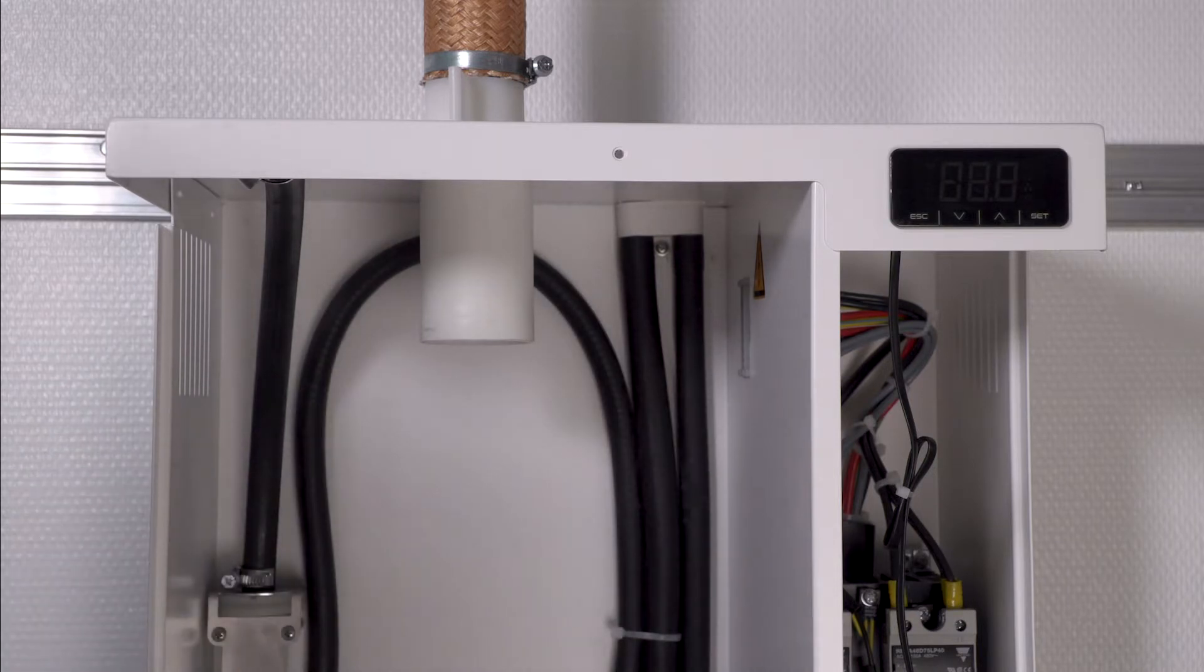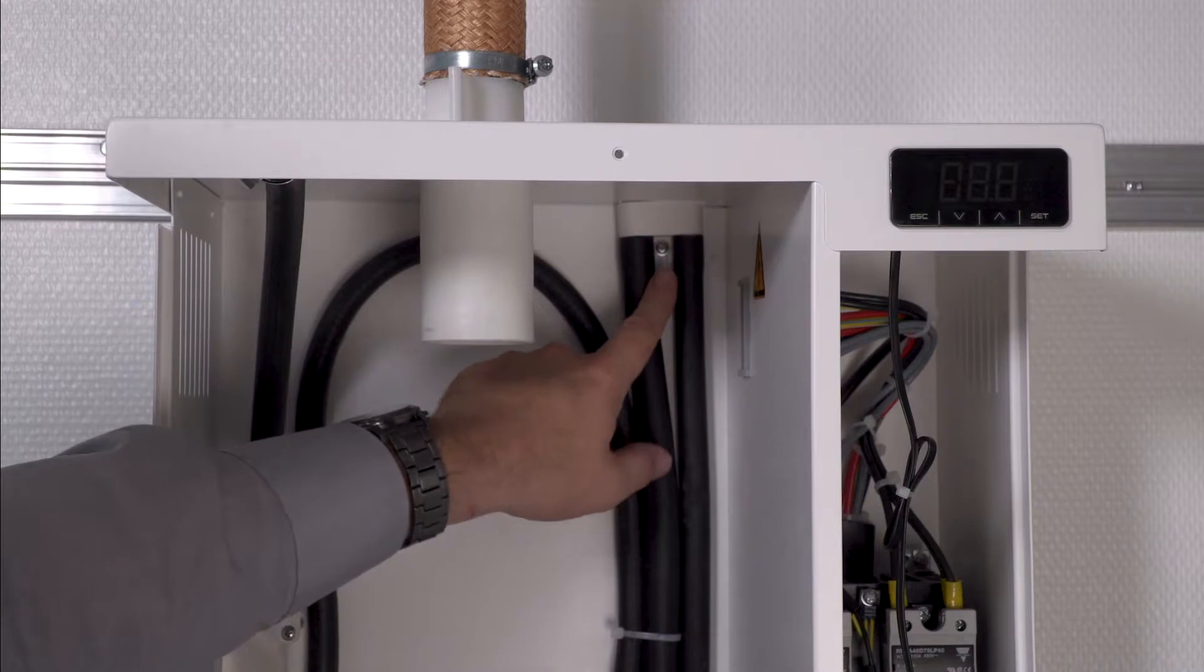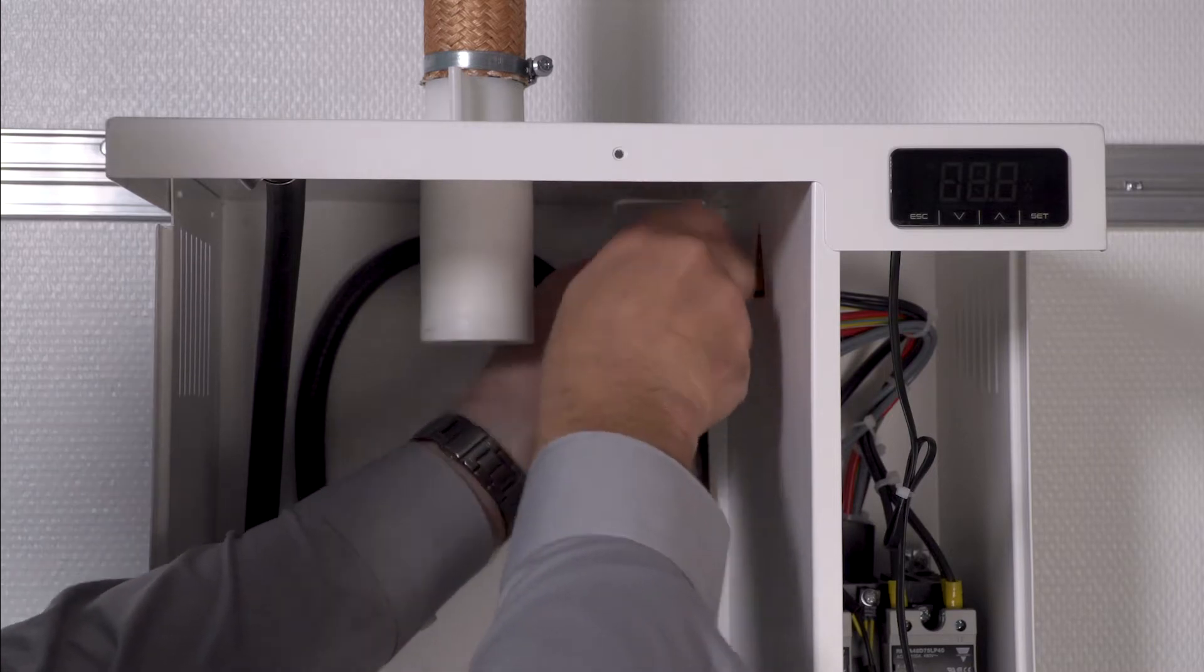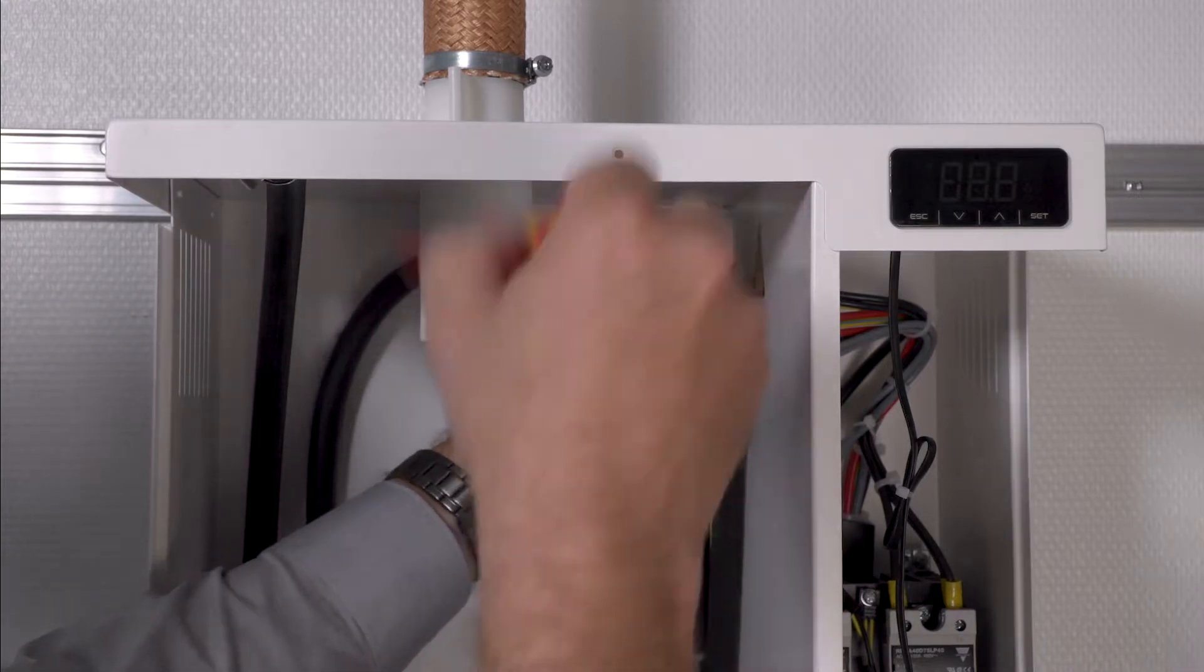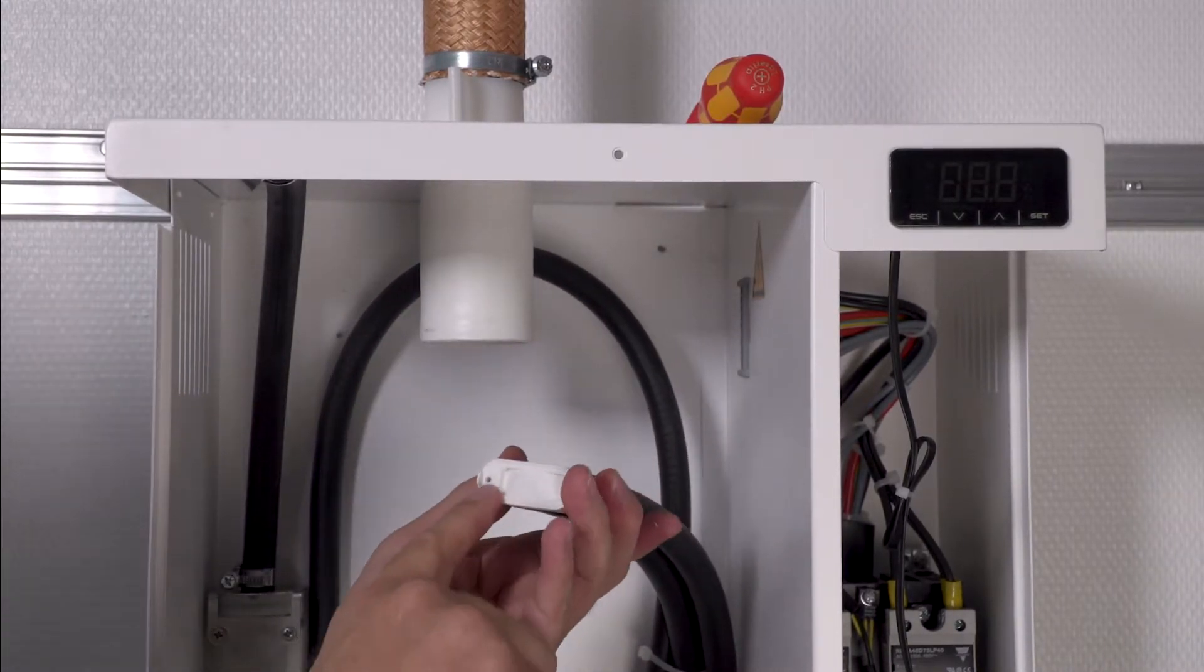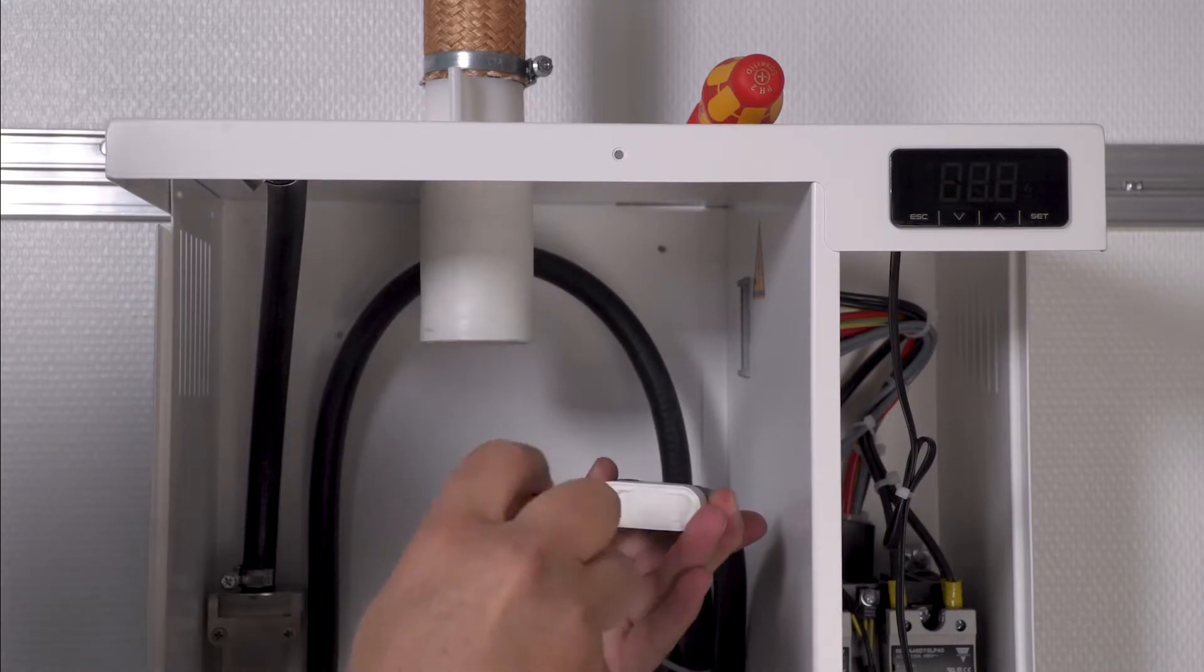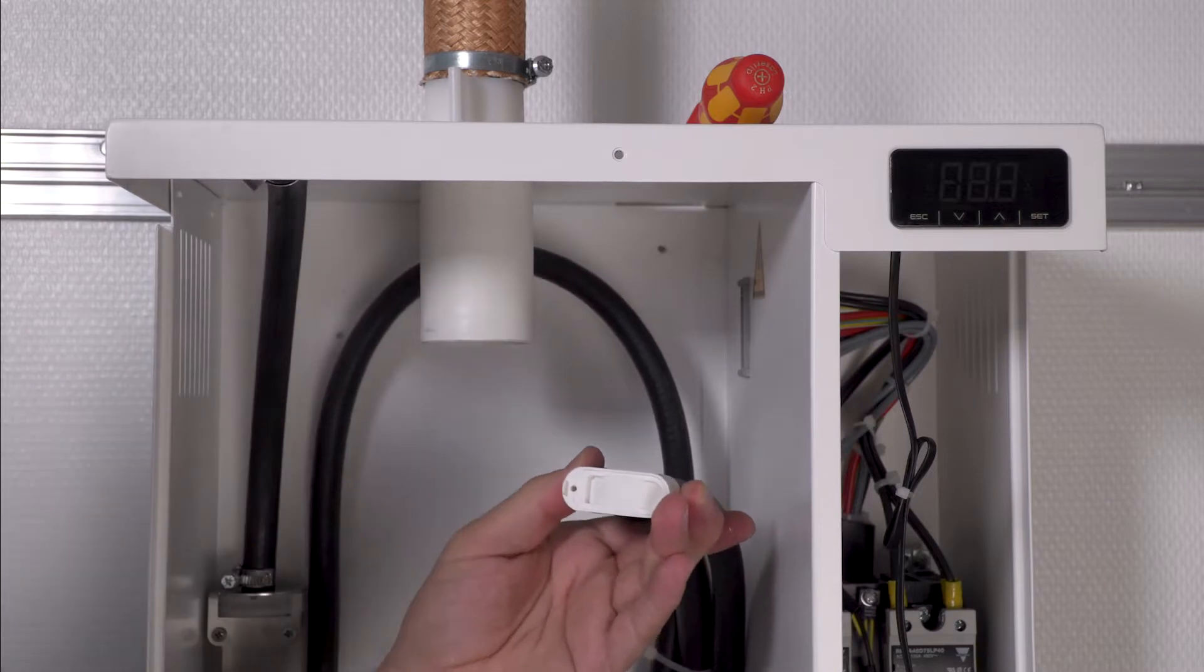Then I remove the pipe bend, which is responsible for drainage from the unit, and check it for residue. If there are any deposits in this ventilation hole, you can easily remove them with a screwdriver by pushing through this hole and cleaning it.